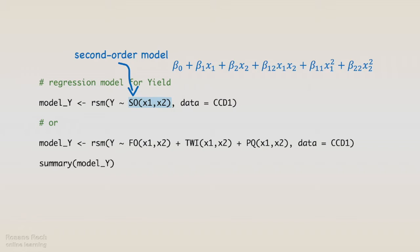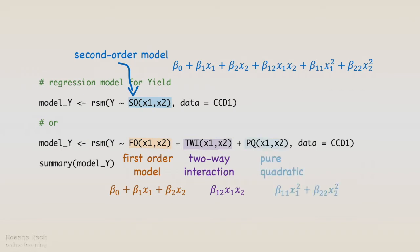Alternatively, we can build the second-order model by its parts, using the command FO for the linear model, TWI for the two-way interactions, and PQ, pure-quadratic, for the quadratic terms. Let's run the latter.